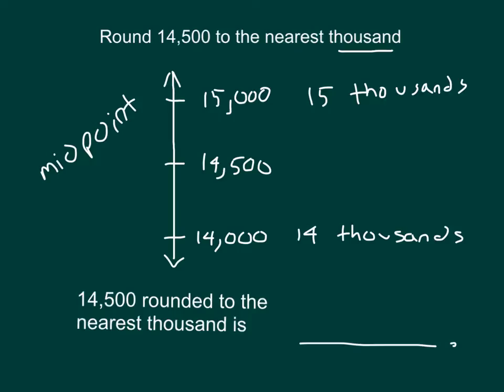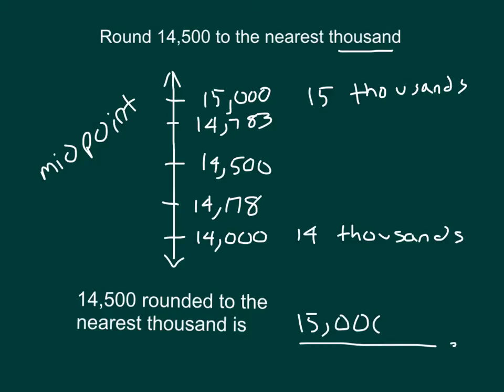In this case, if we were to round 14,500 to the nearest thousand — hey, it's right there on the midpoint. If we had 14,499, it would be closer to 14,000. Even 14,178 would round to 14,000. If we had 14,783, it would be closer to 15,000 because it is beyond 14,500. Since we're looking at 14,500 and it's in the middle, we have a rule where it gets rounded up to 15,000. So 14,500 rounded to the nearest thousand is 15,000.